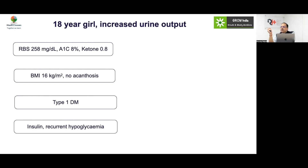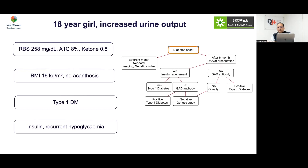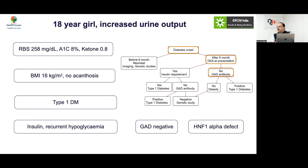She was started on insulin but developed recurrent hypoglycemia — even with just one or two units she had hypoglycemia. Antibody status was negative, so a genetic study was done, which showed an HNF1 alpha mutation. The lesson: if an older individual presents with mild hyperglycemia and mild hyperinsulinemia, and develops hypoglycemia on insulin, think of an HNF defect.